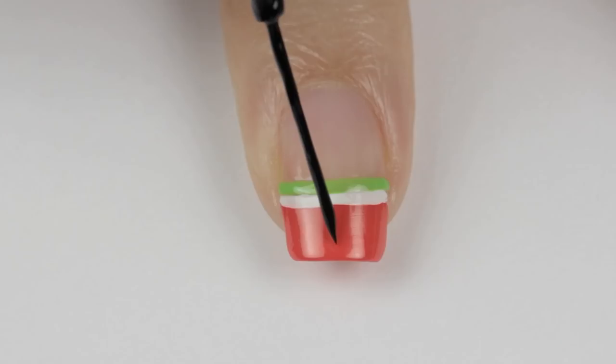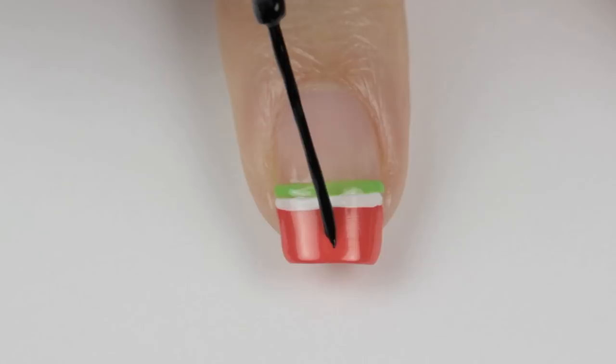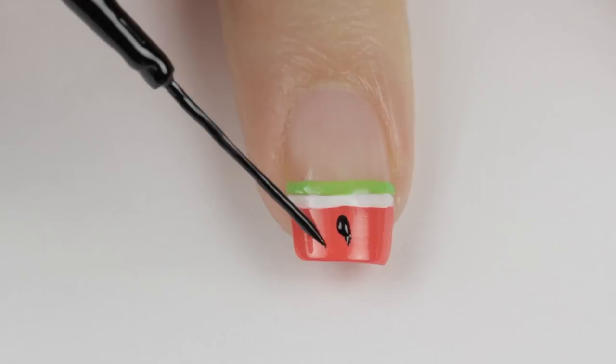Finally, use the black striper to add three seeds. Just lightly dab the very tip of the brush onto the coral part of the design.